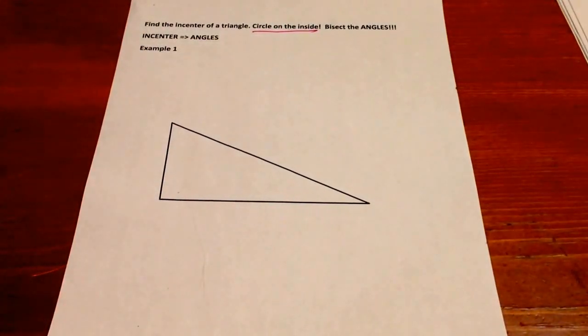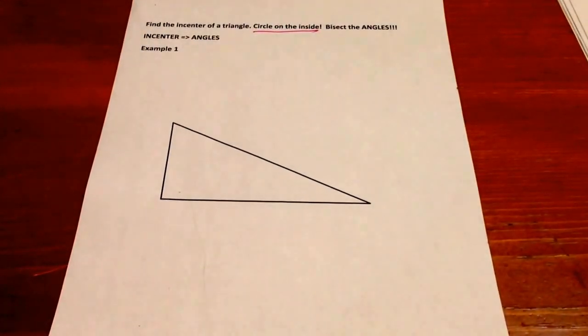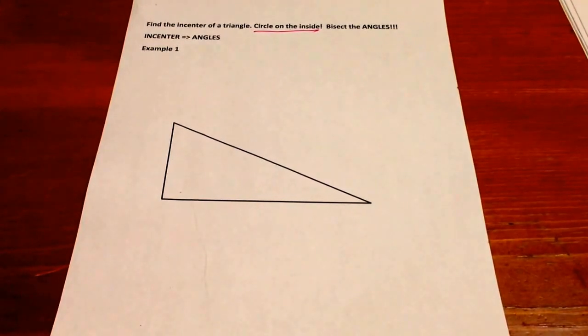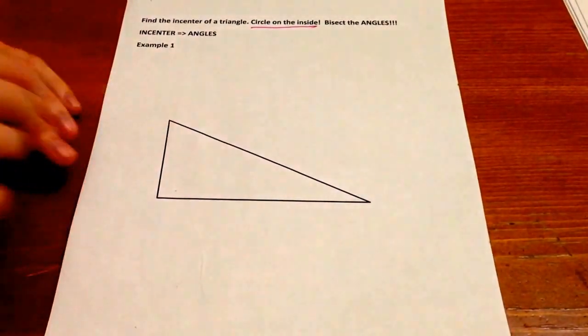And so in order to do this, unlike the last one, we are bisecting the angles this time. So we're talking about bisecting these three angles right here.